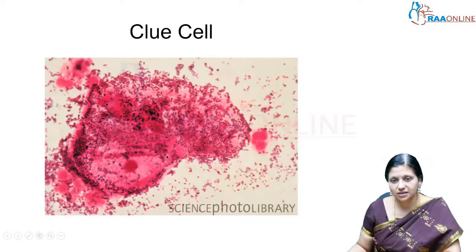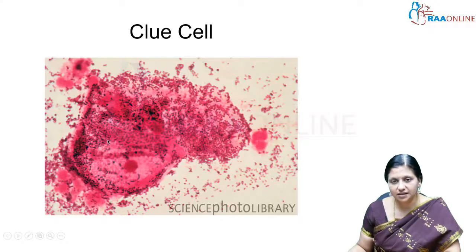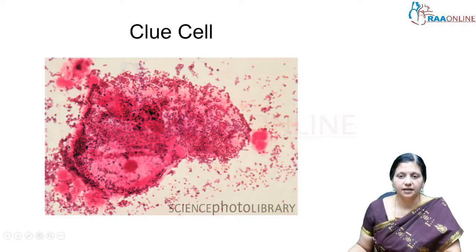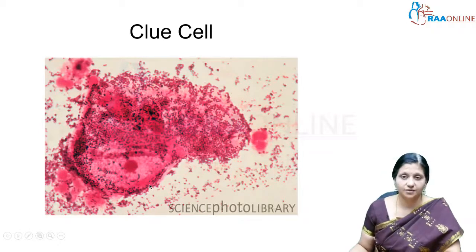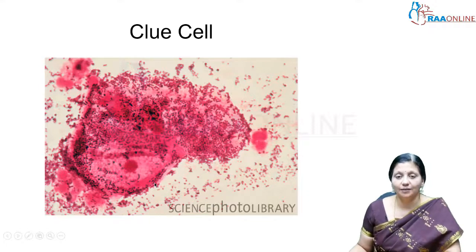A clue cell is also seen after gram staining. We see small coma-shaped or round bacilli — not rod-shaped. The normal bacilli in the vagina are lactobacilli, which are rod-shaped. Here we see a vaginal cell heavily studded with round and coma-shaped organisms. This is called a clue cell and is very pathognomonic of Amsel's criteria for bacterial vaginosis.